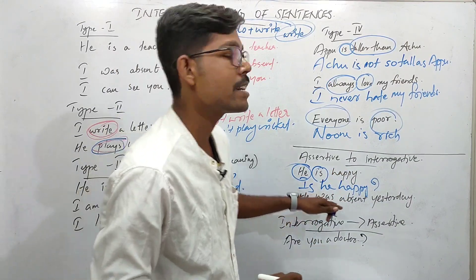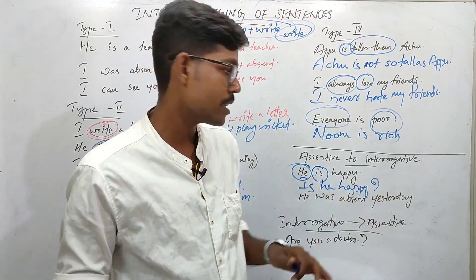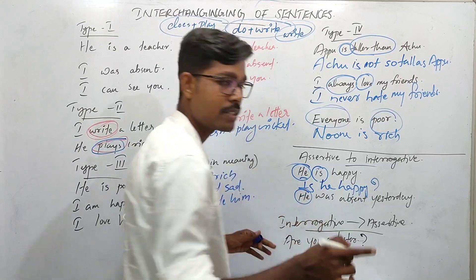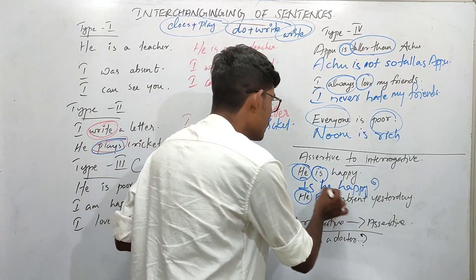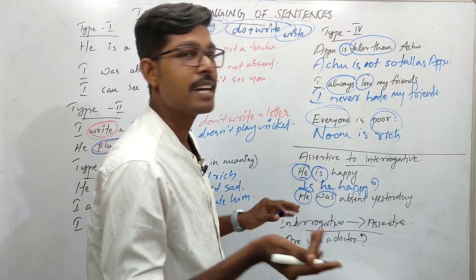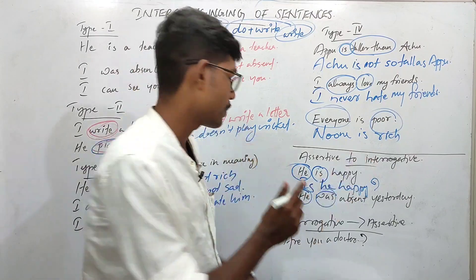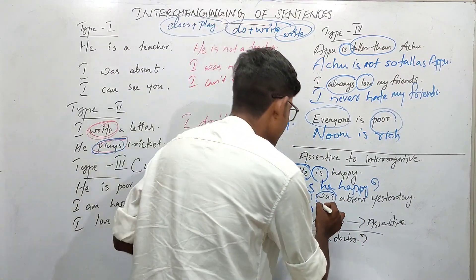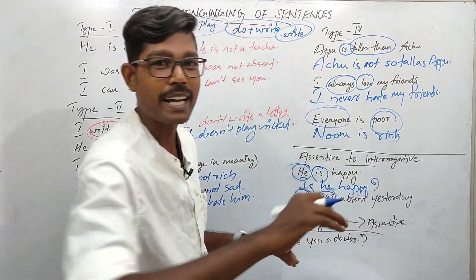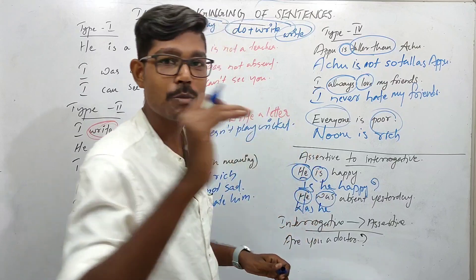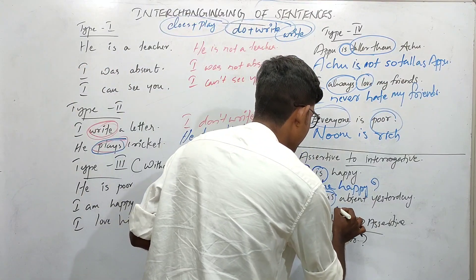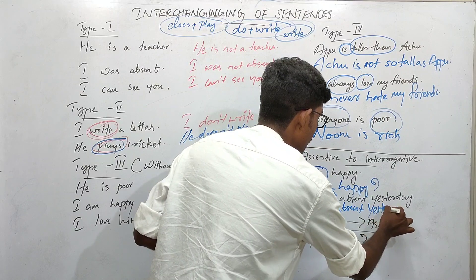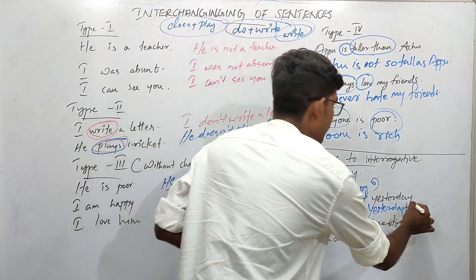Another example: 'He was absent yesterday.' The subject is 'he,' and the auxiliary verb is 'was.' We take the auxiliary verb to the front: 'Was he absent yesterday?'